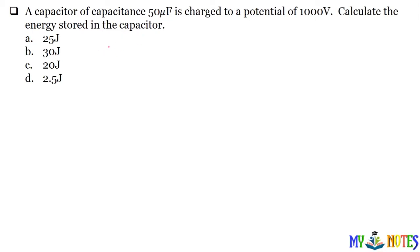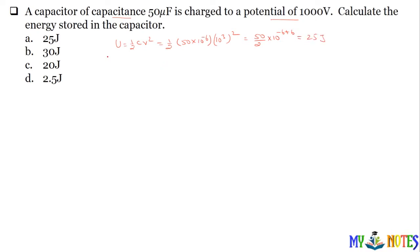Energy ka formula kya hai? Yahan capacitance aur potential dono diye hain, toh formula use karenge: U is equal to half CV squared. C ki value fifty into ten to the power minus six farad, aur V hai ten to the power three. So fifty upon two into ten to the power minus six, plus six — yeh aapka aayega twenty five joule. So this is your correct answer: twenty five joule.